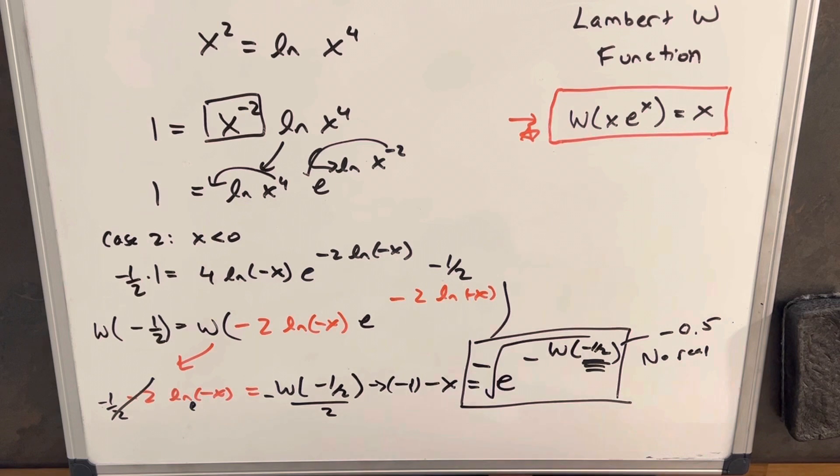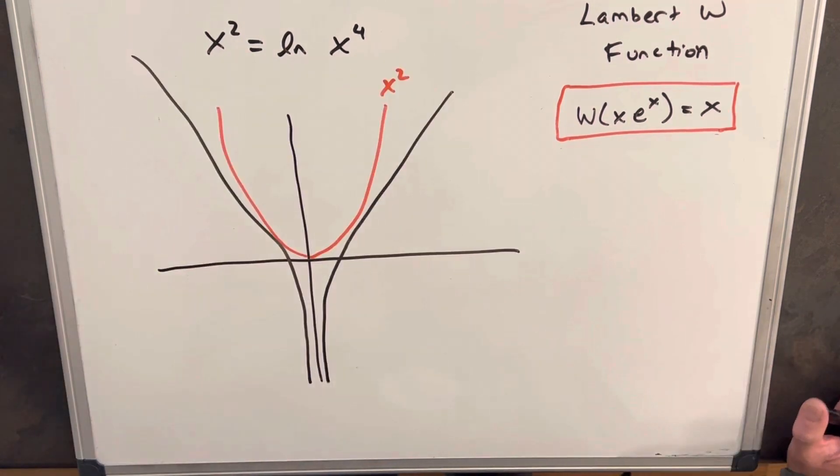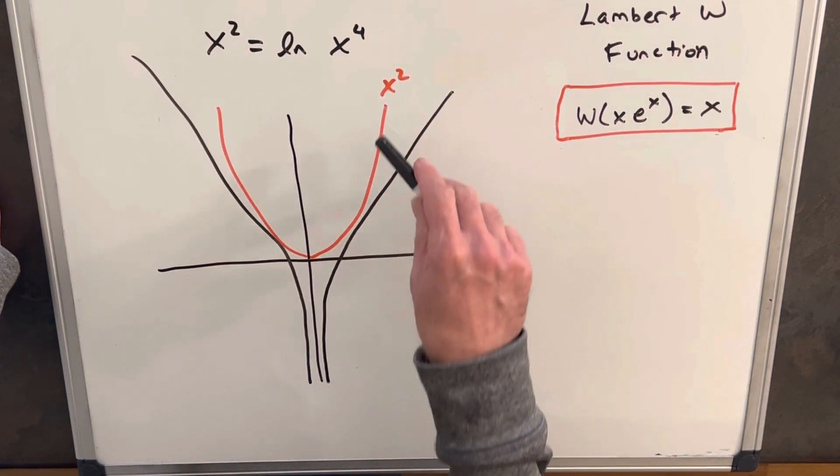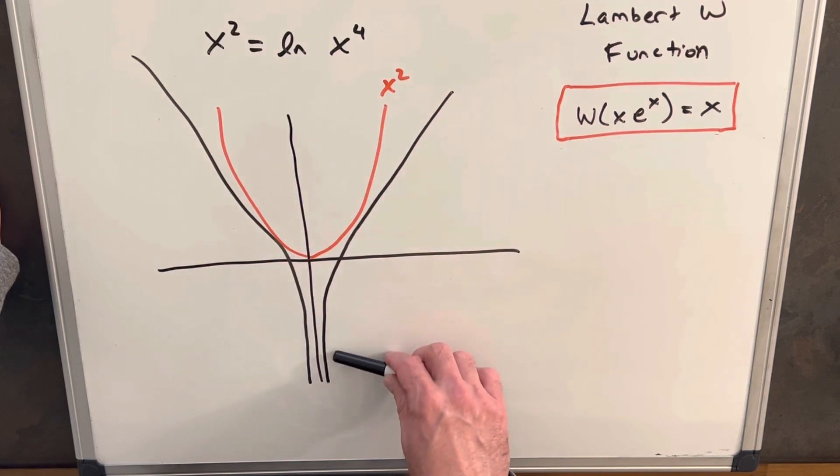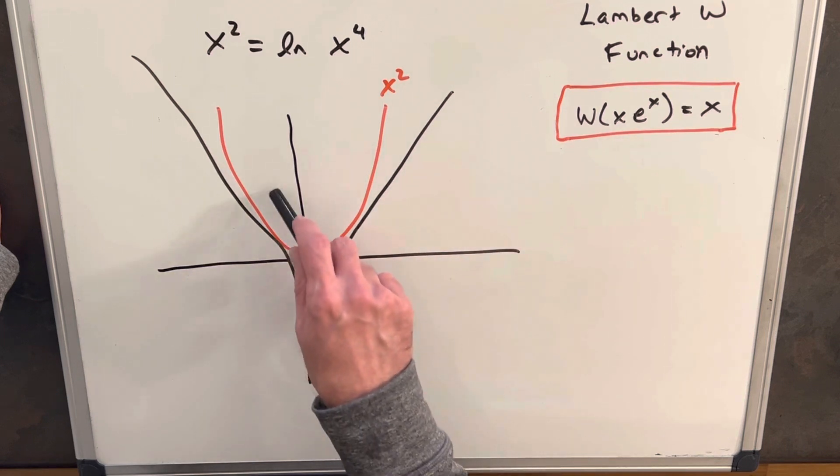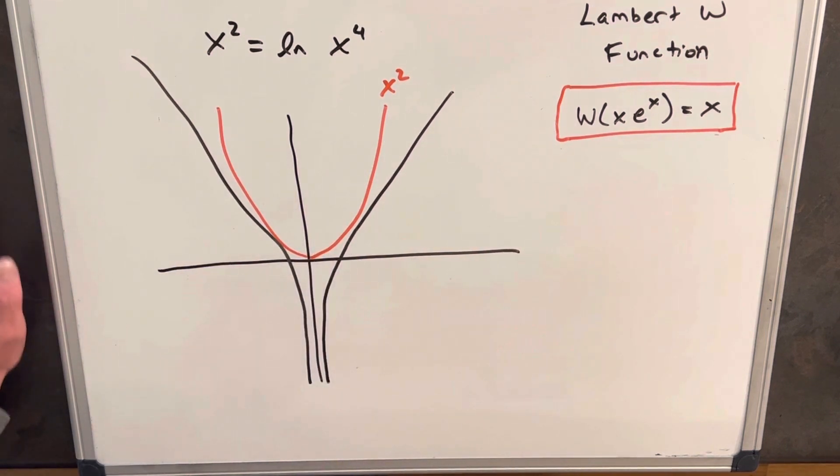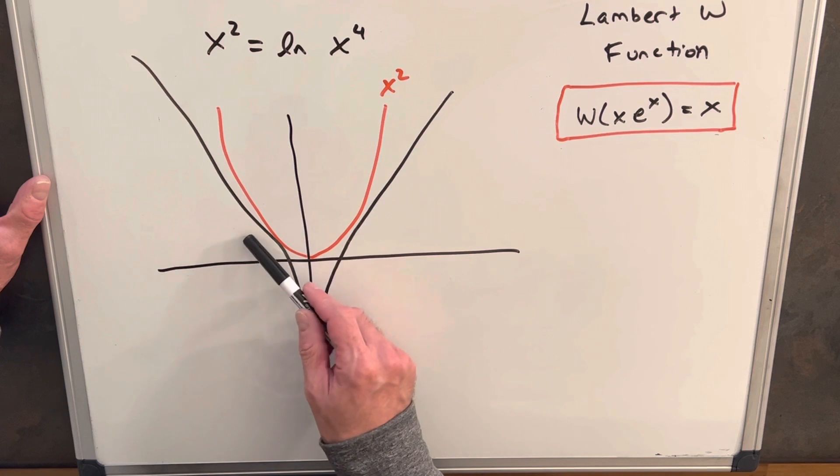Let's take a quick look at the graph to see kind of what happened though. I thought the graph of this was really interesting. We have our x squared in red, just a parabola, and then we have our ln x to the fourth, which makes this like wine glass around the parabola. So you'll see that it comes really close in a couple of points on the positive and negative side.